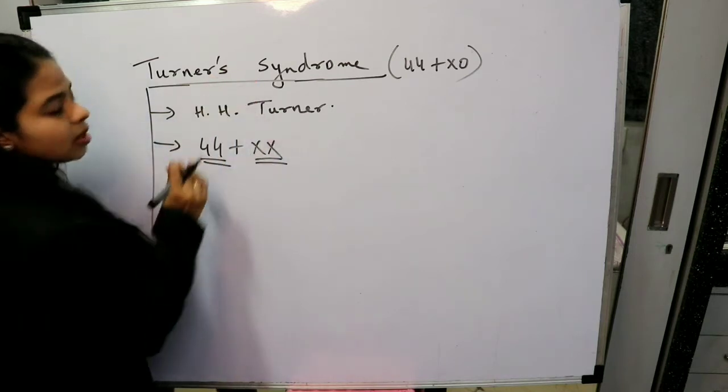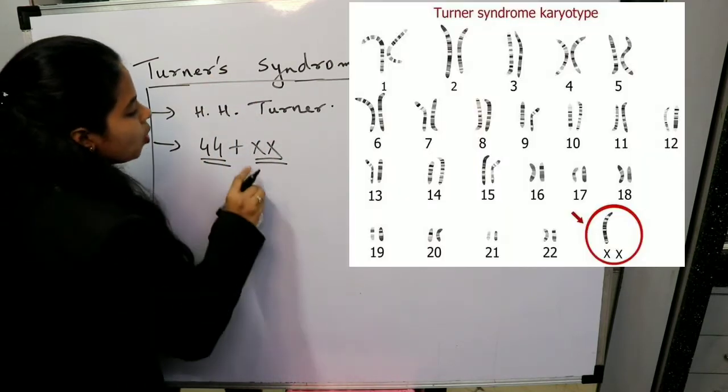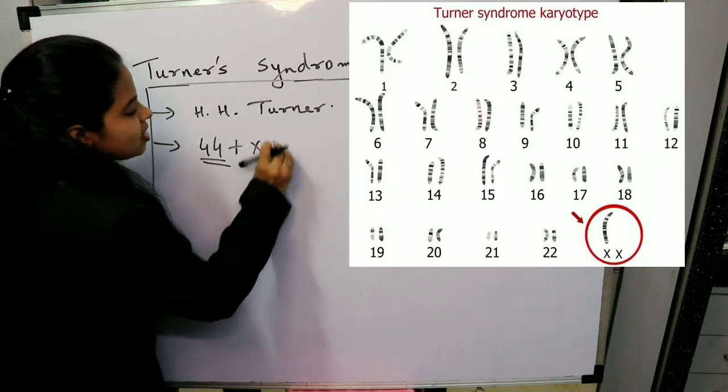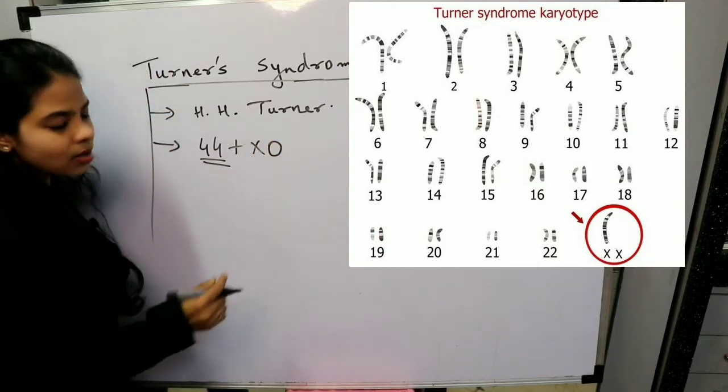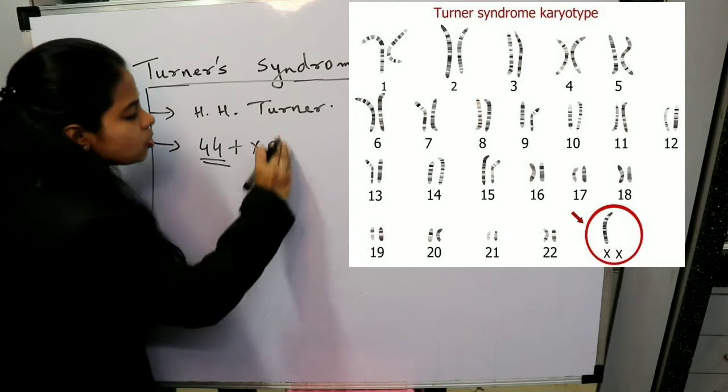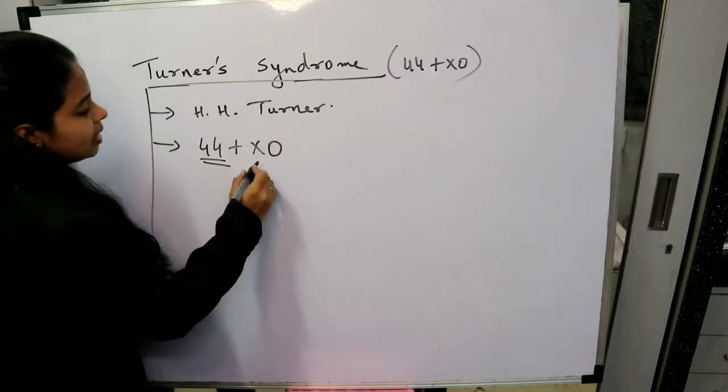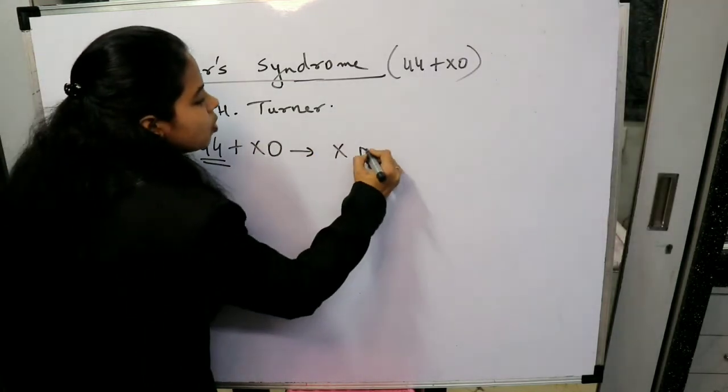But in the female with Turner's syndrome, there is only one X chromosome, that is X monosomy. So there is XO. Since one X chromosome is not there, this condition is known as X monosomy.